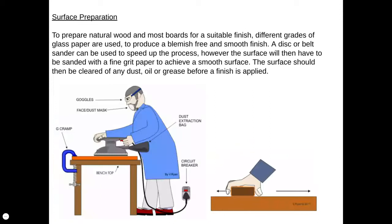What's really important is that prior to finishing any piece of timber, the surface must be prepared properly. To prepare that surface, it needs to be clean, free of dust, and sanded down. The general approach is to use an electric sander to roughly sand down the piece first, then use sandpaper or glass paper of finer and finer grits to create a really smooth finish. It must be cleaned of any dust, oil, grease, or fingerprints before the finish is applied. Try to do your surface preparation and finishing when you're by yourself in a clean, dust-free room.